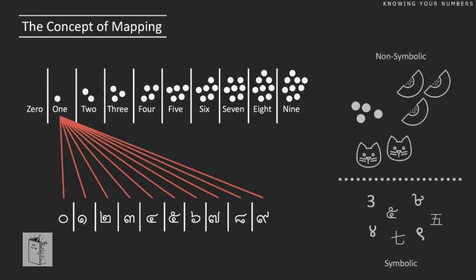This is where the concept of mapping comes in. We have non-symbolic representations — like dots or lemons — where the items are one-to-one with the number they represent. Small babies can't count yet, but they can see quantities in the subitizing range. At the bottom, we have symbolic representations: just by seeing a symbol, you have no idea what it represents — you have to learn it. Somehow you have to take a quantity you perceive and connect it to a symbol, and that connection is mapping.